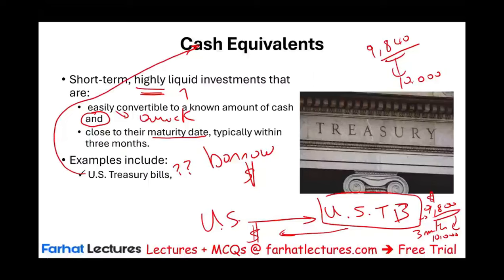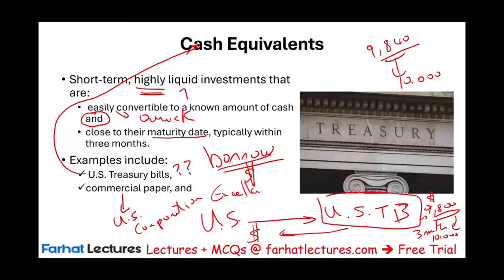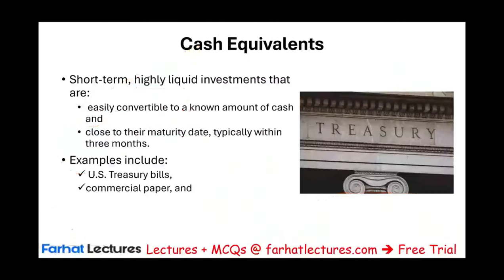Another cash equivalent is commercial paper — a debt instrument issued not by the government, but by U.S. corporations with excellent credit ratings. Same concept: you lend money to a highly creditworthy corporation and receive a short-term instrument easily convertible to cash. Another example is money market funds. When you deposit money at an investment firm, they place it in a money market account where you can convert your funds easily back to cash. These are all examples of cash equivalents.